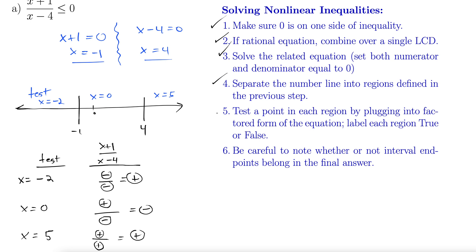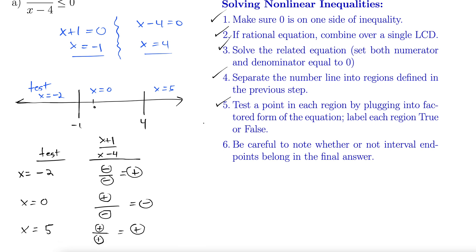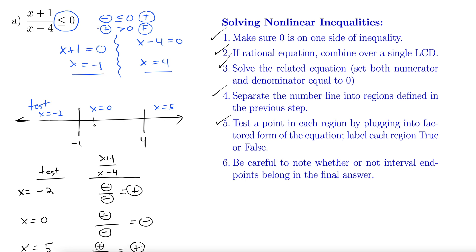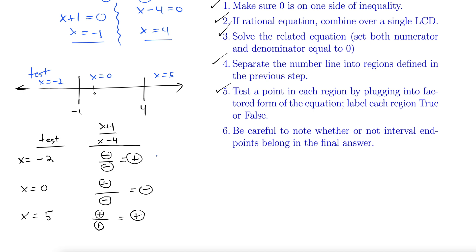To label our regions as true or false, we return to the original problem. The inequality is less than or equal to zero, so when a region is negative — which is less than or equal to zero — that's true. If it's positive — greater than zero — that's false. You have to base the true/false labeling on each specific problem. So: negative gets true, positive gets false. Our results are: false, true, false.